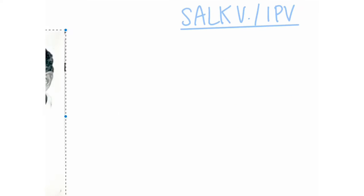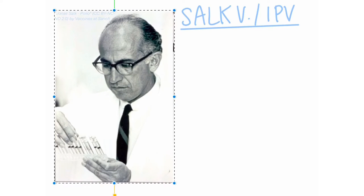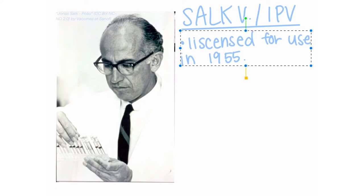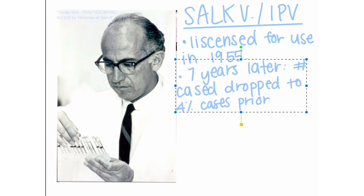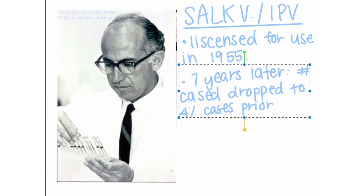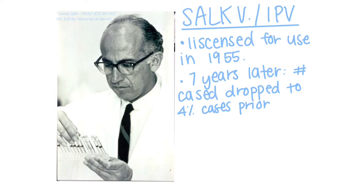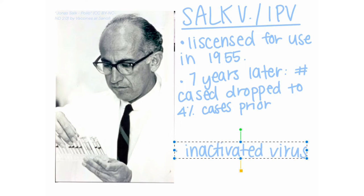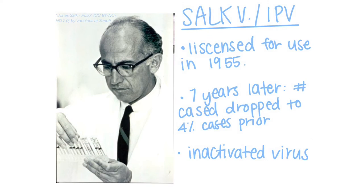The first IPV was developed by Dr. Jonas Salk and was licensed for use in 1955. By 1961, seven years after its launch, the number of polio cases decreased to only 4% of the cases prior to its release. The vaccine did not contain a live virus, but an inactivated virus, so it is now commonly called the IPV, or inactivated polio vaccine.